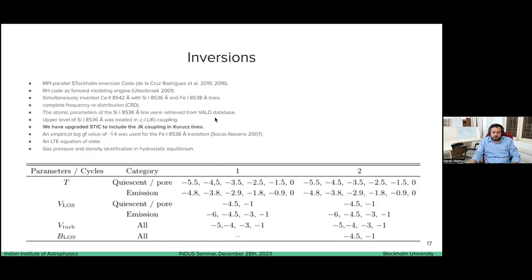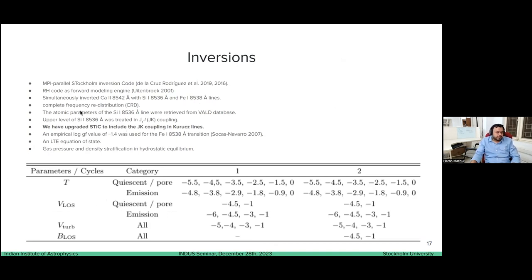For inversions, we used the STIC inversion code with the RH code as a forward modeling engine. We simultaneously inverted calcium, silicon, and iron lines. CRD is assumed, and atomic parameters are taken from the VALD database. We just upgraded STIC to include JK coupling in Kurucz lines. What JK coupling does is change the Landé g-factor of a particular level, which eventually gives a higher Stokes V signal — the amplitude of Stokes V becomes larger because the Landé g-factor increases.